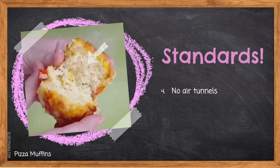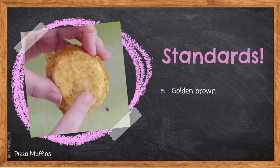Four — no air tunnels. Air tunnels are caused by over-activating the gluten. You do need some gluten to provide structure, but too much causes it to stretch out during baking, leaving giant air tunnels throughout the muffin. Five — golden brown. This is achieved by greasing your pan properly and adding the correct amount of sugar for caramelization. The bottom of the muffin should be neither burnt nor undercooked — it should be the perfect color of golden brown.